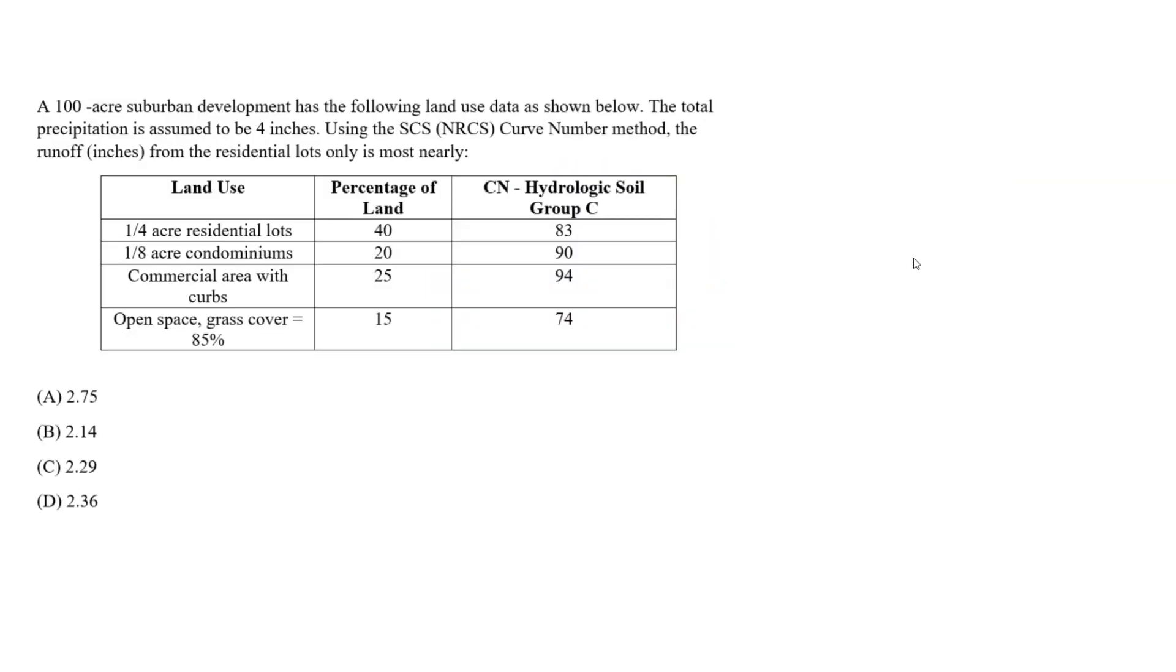If we raise the question, we know we have a 100-acre suburban development that has the following land use data as shown below. So we have the land use data, and the total precipitation is assumed to be 4 inches.